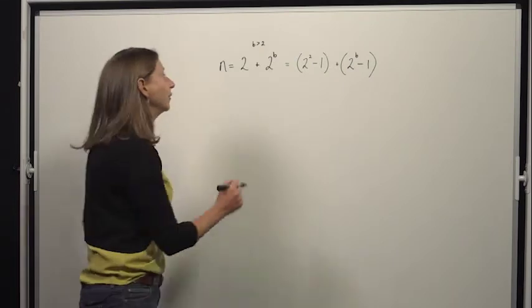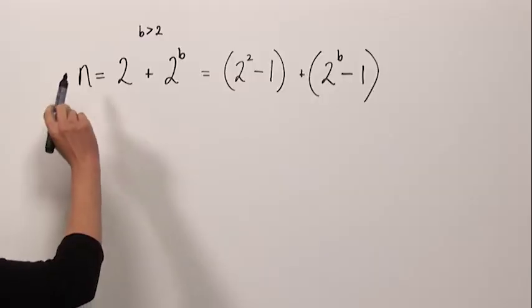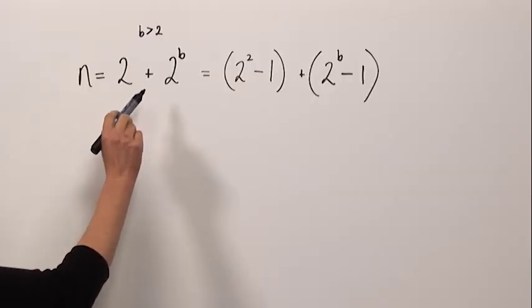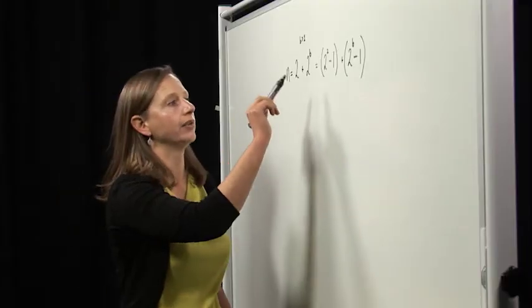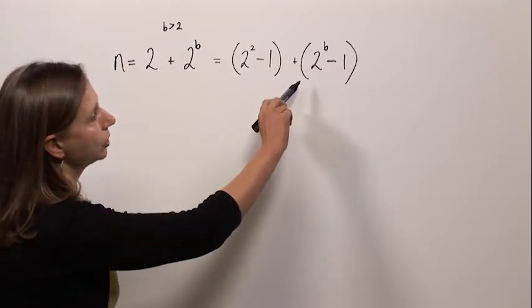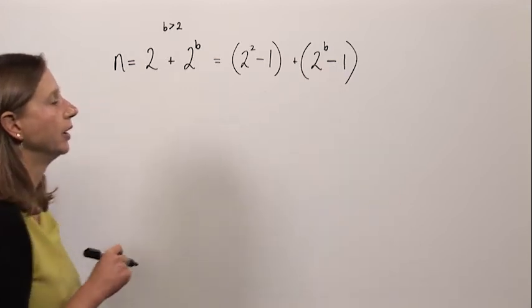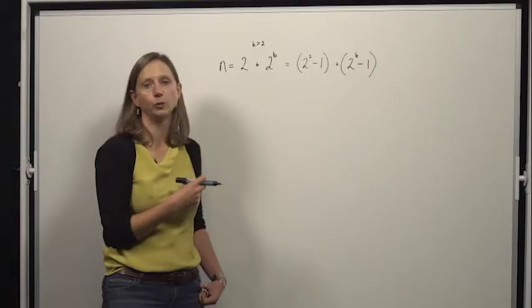So using all the information that we have found, we get to this position. n is equal to two plus two to the power of b. And we also have that n is equal to two squared minus one and two to the power of b minus one. So it becomes a question now about what could be b.